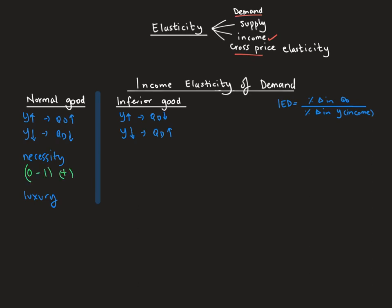The necessity product has a positive elasticity between zero and one — for example, food, because you can only consume a certain amount. A luxury product, like a car or a holiday, also has a positive elasticity but greater than one, showing that it is a luxury product. For now, this is just a brief overview of the difference between an inferior good and a normal good.